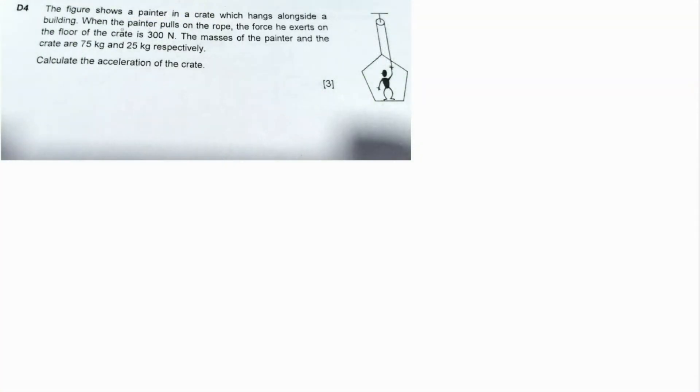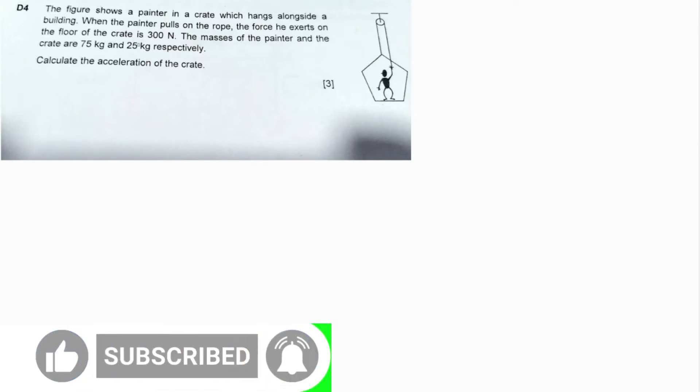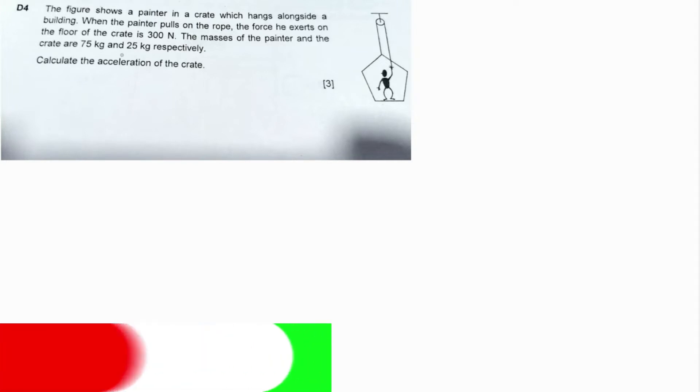This problem shows a painter in a crate which hangs alongside a building. When the painter pulls the rope, the force he exerts on the floor of the crate is 300 newtons. The masses of the painter and crate are 75 kg and 25 kg respectively. We need to calculate the acceleration of the crate.